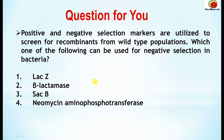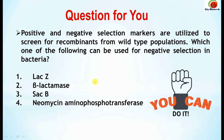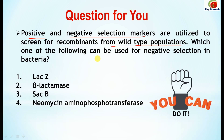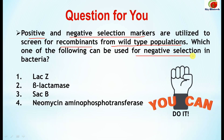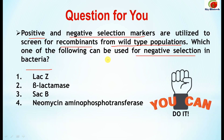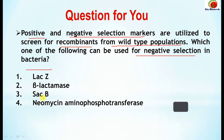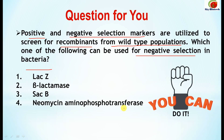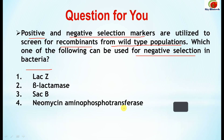Here comes a new question for you: positive and negative selection markers are utilized to screen for recombinants from wild-type populations. Which one of the following can be used for negative selection in bacteria? The options are: lacZ, beta-lactamase, sacB, and neomycin aminophosphotransferase. Please give us the answer in the comment box and we will discuss it in our next video.